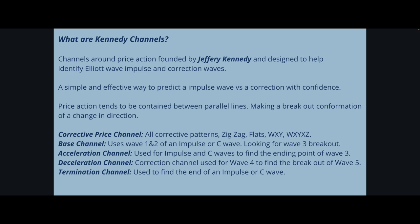We are going to go over different types of channels. The corrective price channel is used for all corrective patterns — zigzag, flats, WXY, WXYXZ. The base channel uses wave one and two of an impulse or C wave, and you are looking for the wave three breakout. The acceleration channel is used for impulse and C waves to find the ending point of wave three. The deceleration channel is a correction channel used for wave four to find the breakout of wave five. The termination channel is used to find the end of an impulse or C wave.